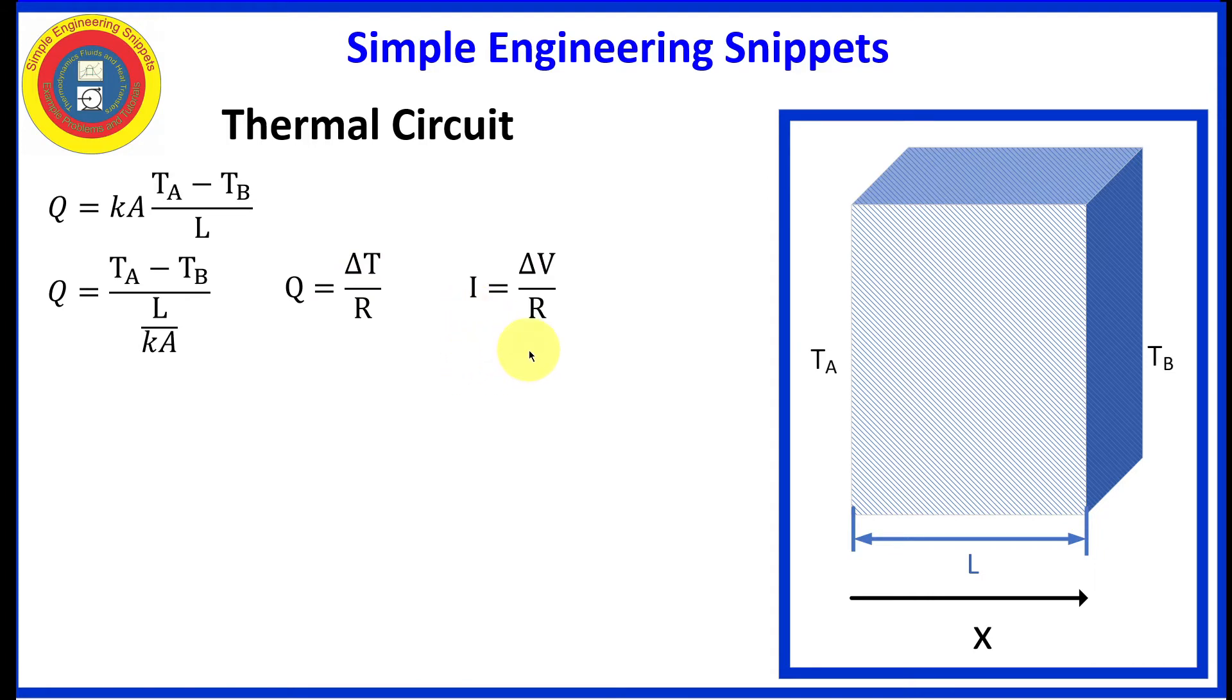This equation looks a lot like Ohm's law in electrical circuits, where now the heat transfer rate is analogous to the current, the driving potential for current is a change in voltage, and the driving potential for heat transfer is a change in temperature. And they both have resistance in the denominator. But in our equation, the denominator is this grouping of length over the conductivity times the area. And so that's how we define our thermal resistance through the heat conduction is by equating these equations.